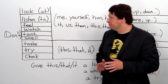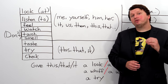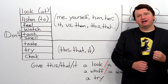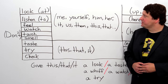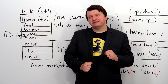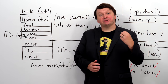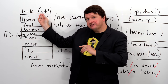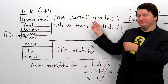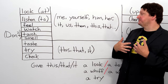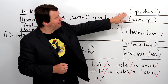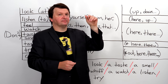I want to go through each verb one by one. First, you can tell someone to look. If you want to direct their attention to a particular person or thing, you say look at: look at me, look at yourself, look at him, look at her, look at it, look at us, look at them, look at this, look at that. You can also use adverbs with look, such as up and down — look up, look down — and also look there, look here.